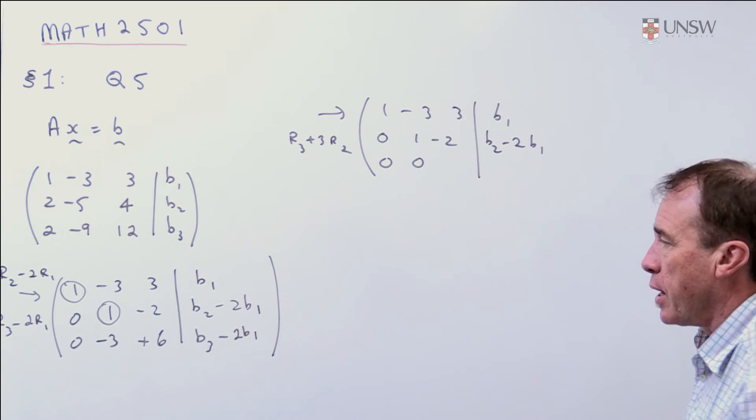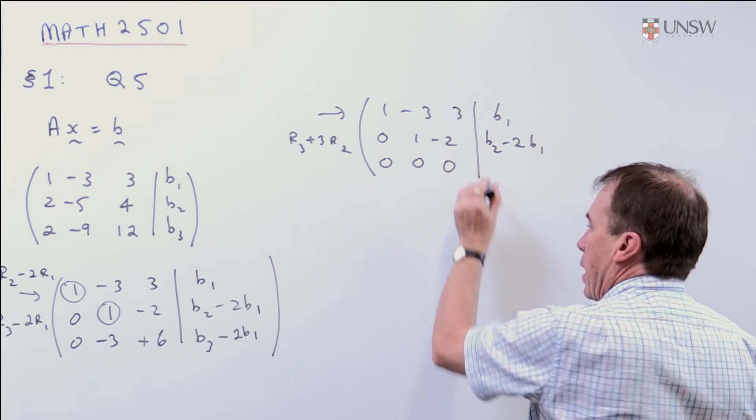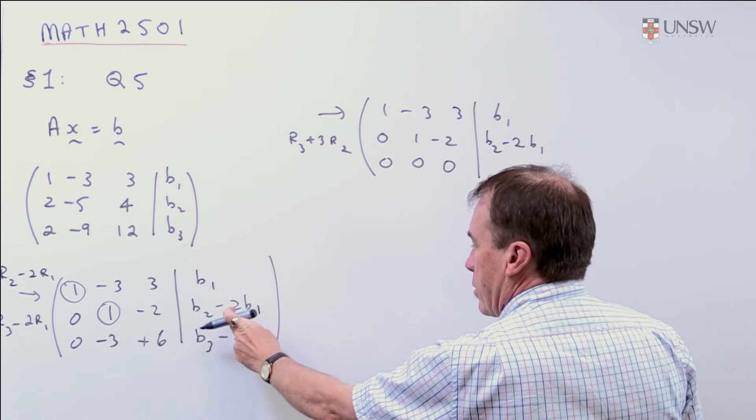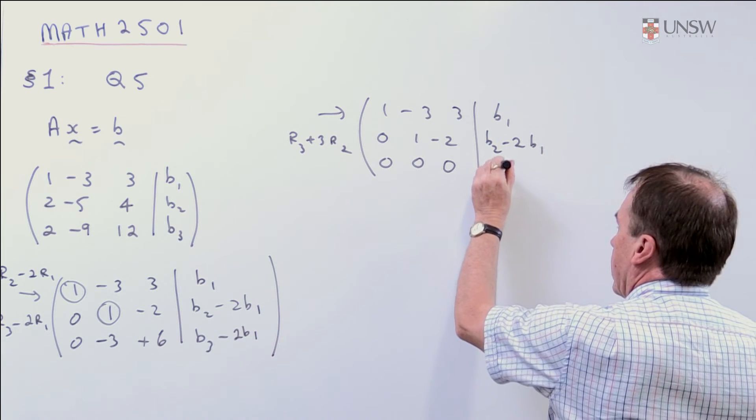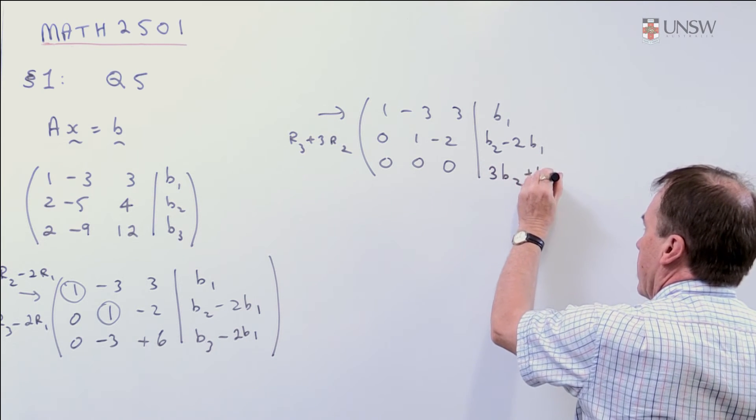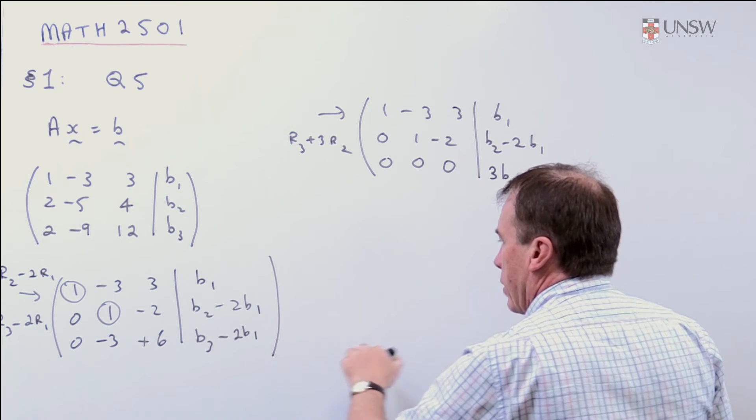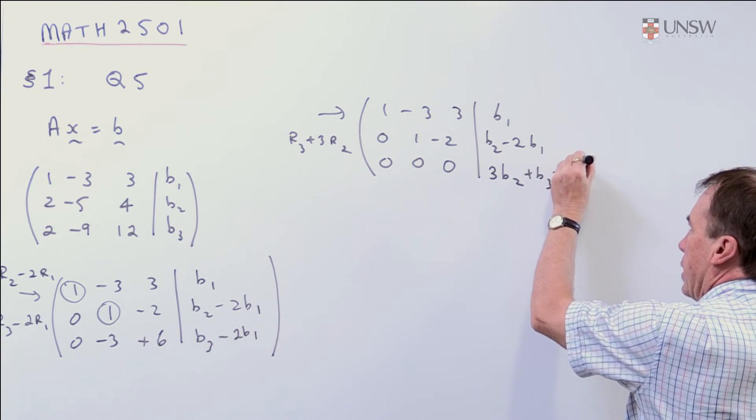So, that'll give me a 0 there. That's going to give me a 0 there. And if I take, times that by 3 and add, I get 3B2, I get plus B3, and I multiply that by 3 and add, I get minus 8B1.